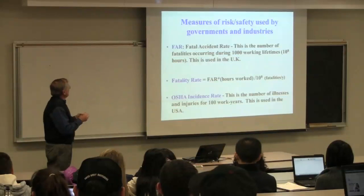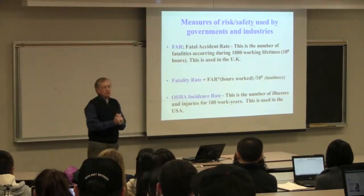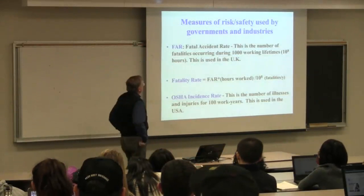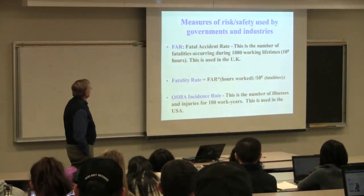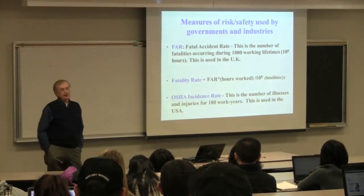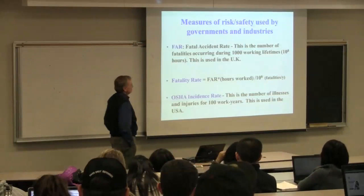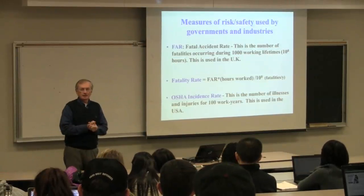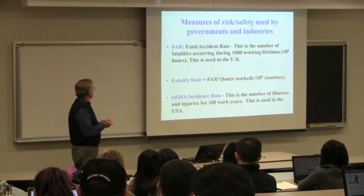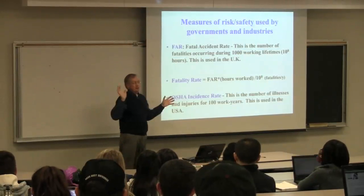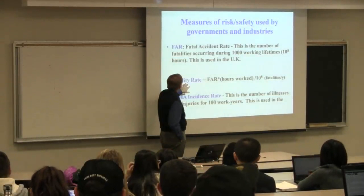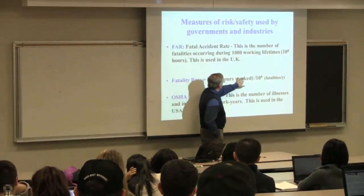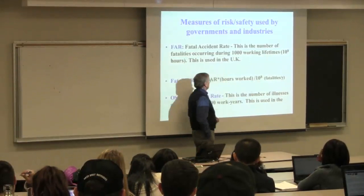A quick look at how safe are we. The FAR is the fatal accident rate, mostly used in the United Kingdom. This is the number of fatalities occurring for 1,000 working lifetimes. So if we had 1,000 people and they all worked for their entire careers, how many of them are going to get killed at work? That's an important number to know. Sometimes this is transferred into a fatality rate of fatalities per year — you take the FAR, multiply by how many hours you worked in a year, and divide by 10 to the 8.